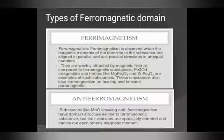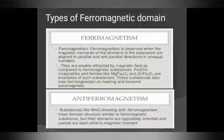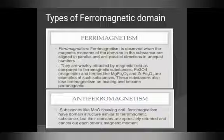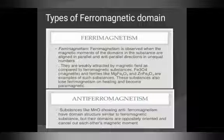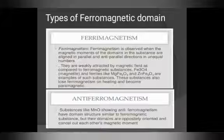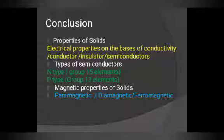Ferrimagnetism is observed when the magnetic moments of domains in a substance are aligned in parallel and anti-parallel directions — one up, one down, alternating. They are weakly attracted compared to ferromagnetic substances. Examples include iron oxide (magnetite) and ferrites like magnesium ferrite. These substances lose ferrimagnetism on heating and become paramagnets. Anti-ferromagnetism is shown by substances like MnO — similar to ferromagnetic substances, but their domains are oppositely oriented and cancel each other's magnetic moment.